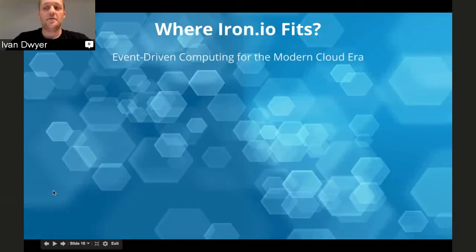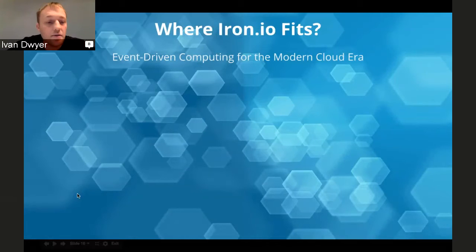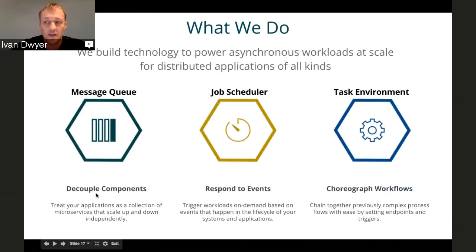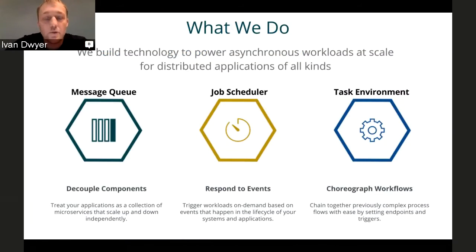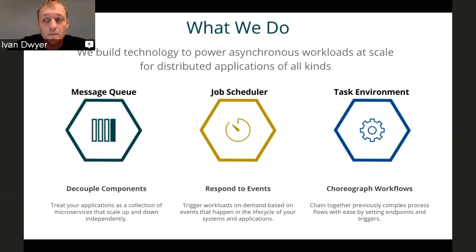So where do we fit in this world? What do we do in the context of event-driven computing and asynchronous workloads? That's always been our focus. We build technology for powering asynchronous workloads, meant for distributed applications of all kinds — mobile, web, and IoT. We do this through a variety of services, including Iron MQ and Iron Worker. Iron MQ is a message queue service, and Iron Worker is this task-centric environment. It includes a scheduler, a runtime, and does all the choreographing under the hood. Iron Worker has Iron MQ built into it for acting as a task queue, so you can use them independently or together as one complete task-centric environment.